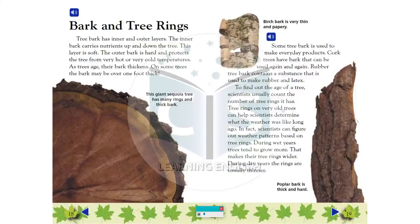Some tree bark is used to make everyday products. Cork trees have bark that can be used again and again. Rubber tree bark contains a substance that is used to make rubber and latex.